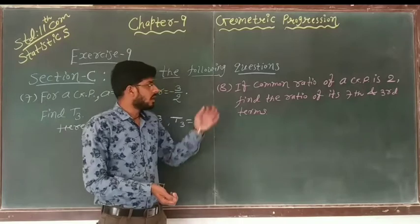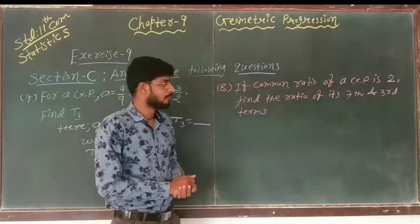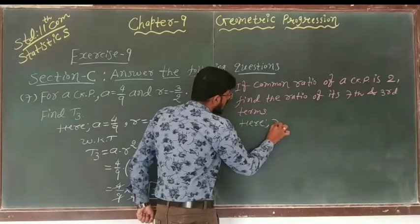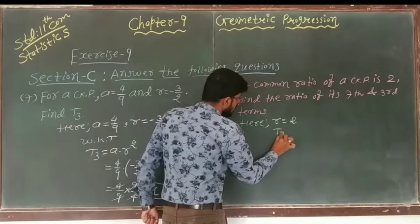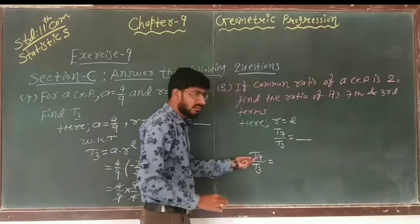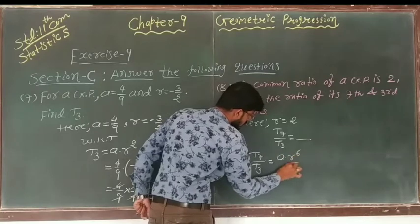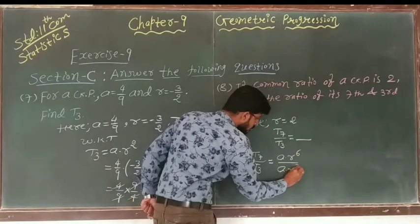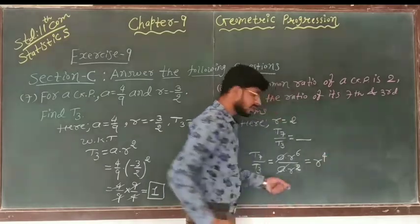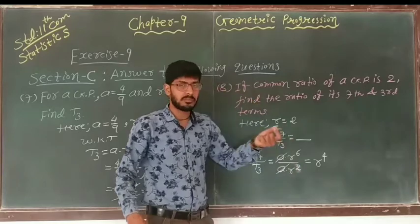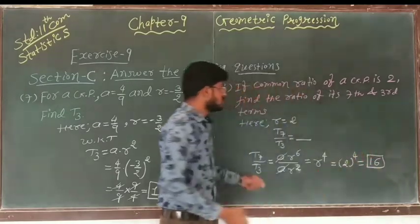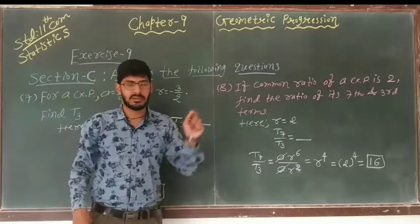Question number 8: If the common ratio of a GP is 2, that is R equals 2, find the ratio of the 7th term to the 3rd term. We write T7 over T3. T7 equals A into R raised to 6, and T3 equals A into R raised to 2. Dividing, A cancels, giving R raised to 4, which is 2 raised to 4, equals 16. So the ratio of the 7th to the 3rd term is 16.